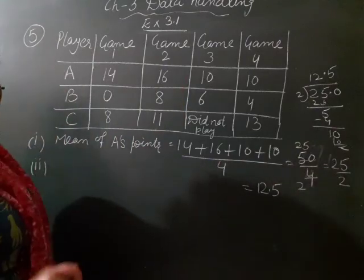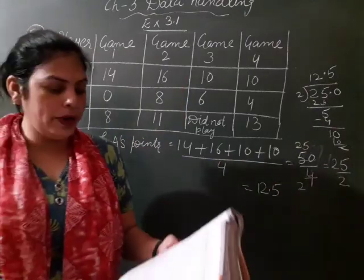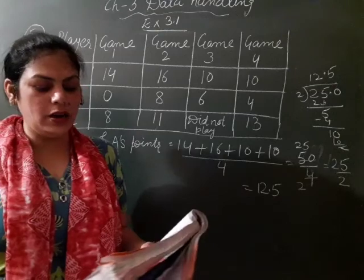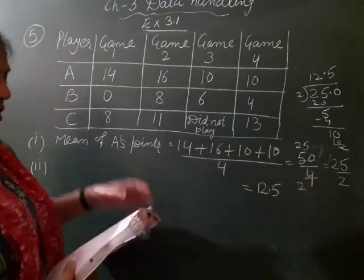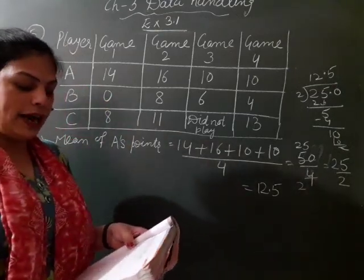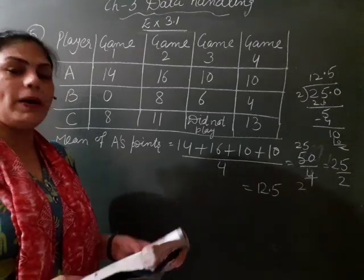Now asking second question, how many, to find the mean number of points per game by C. So would you divide the total points by 3 or by 4? Why?